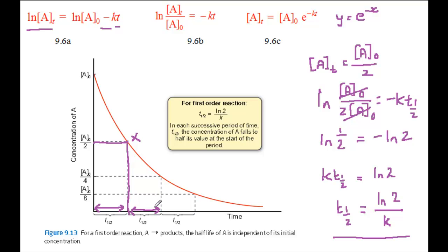And obtain a third value by finding the time for the concentration to fall by half again from A0 over 4 to A0 over 8 and so on.